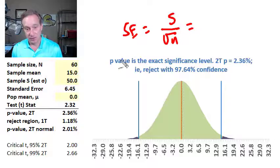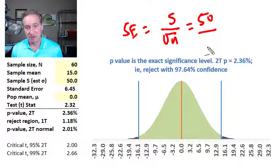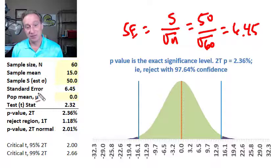In that case, or under these examples, that is 50 divided by the square root of 60, our sample size, and you can see that is 6.45 is our standard error.